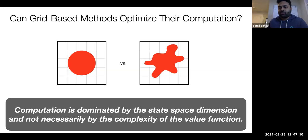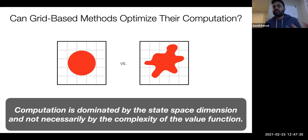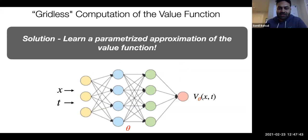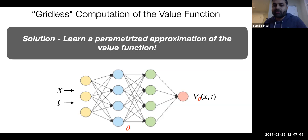Several people have thought about this question — that's why there are other reachability-based methods that use shapes like polyhedra or ellipsoids to represent the value function, since in some cases those representations are much more efficient. But we don't always know which shape is best for a given value function. So one solution is to learn the representation itself: we learn a parameterized approximation of the value function using a neural network, which takes as input the state and time, has parameters theta, and outputs the value at that state and time.